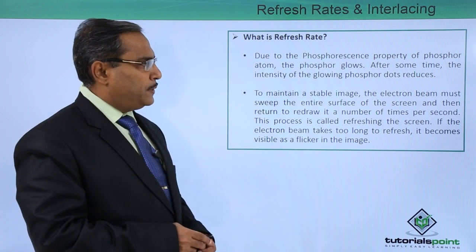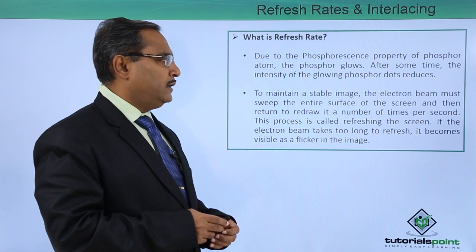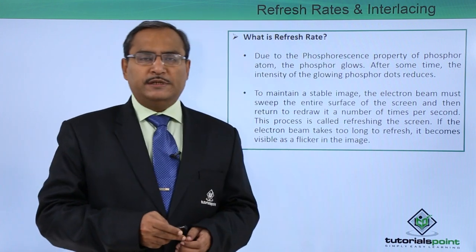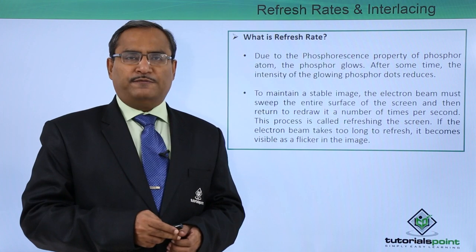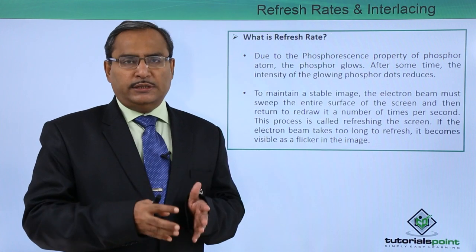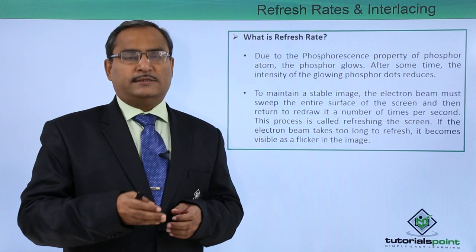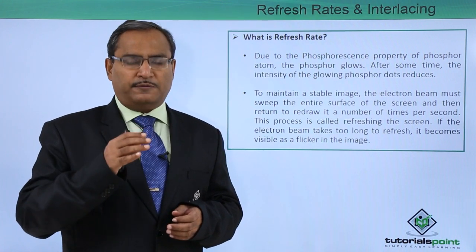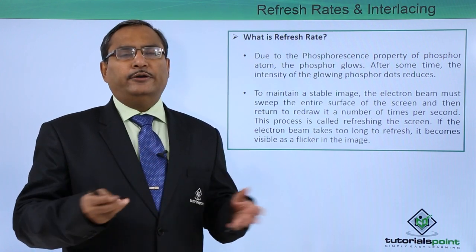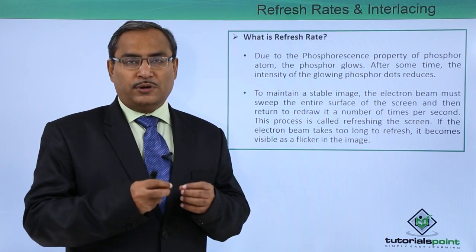Due to the phosphorescence property of phosphor atoms, the phosphor glows and after some time the intensity of the glowing phosphor dots reduces. As we discussed in the previous video, when the phosphor atoms are struck with the electron beam, depending upon the energy in the electron beam, those phosphor atoms get some energy, go to the next higher state, and then after being there for some duration, come back to their original lower energy state and release some energy in the form of light energy. That is why we say the phosphor is glowing.